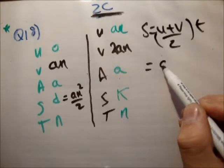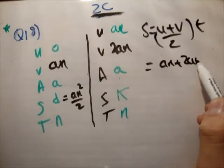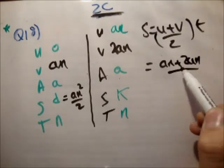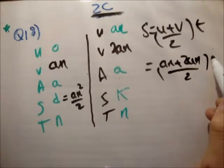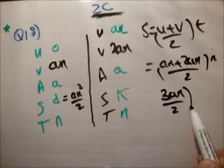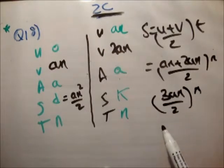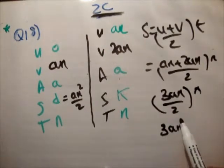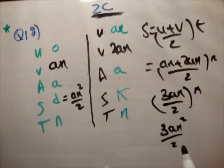Is equal to an plus 2an over 2 times n. 3an, 3an, over 2 times n, 3 an squared over 2. 3 an squared over 2.